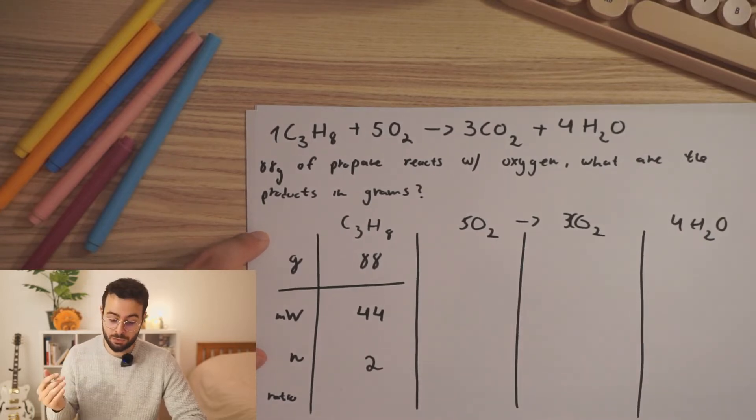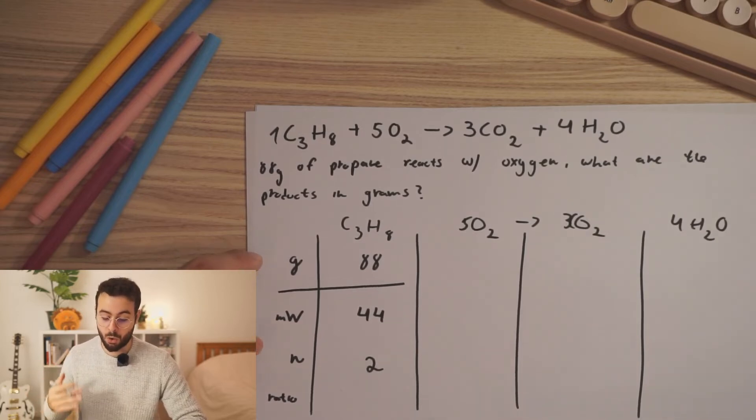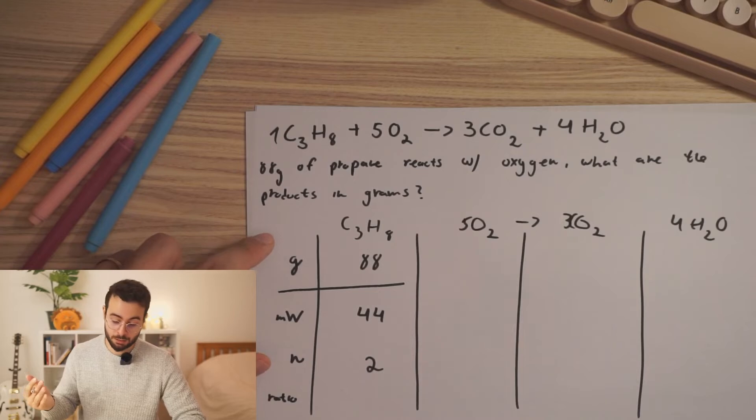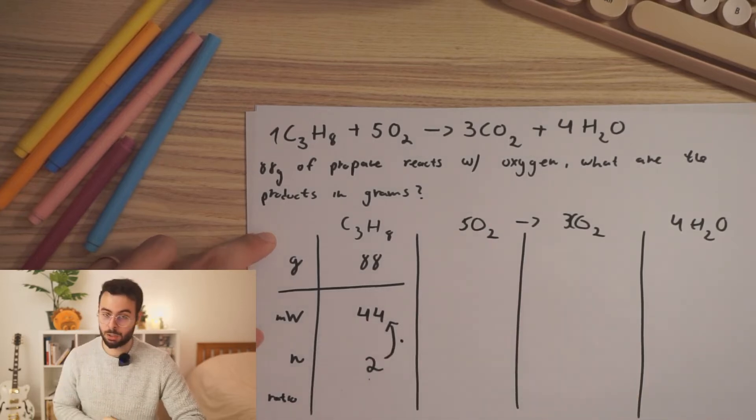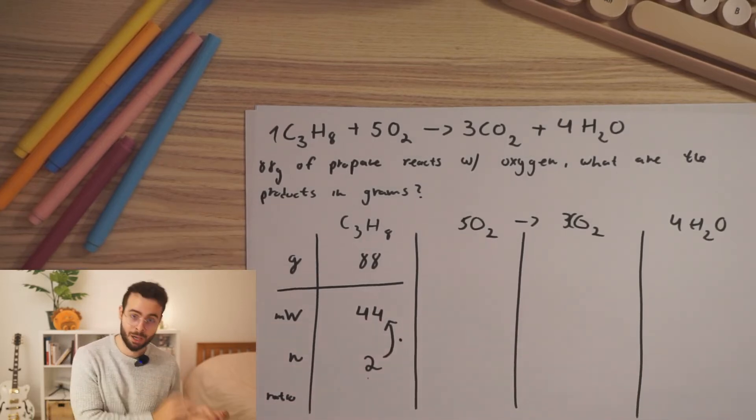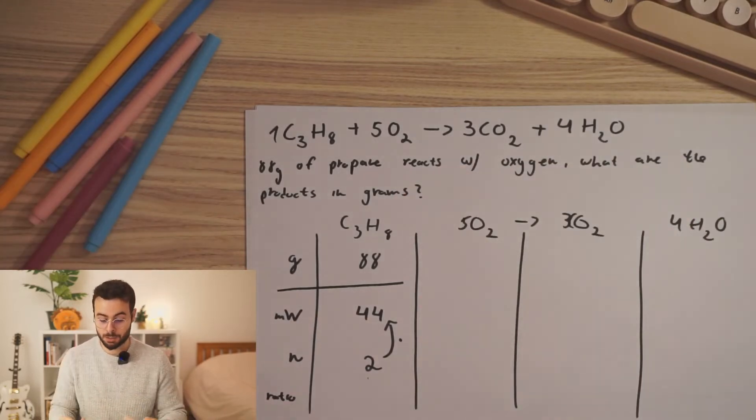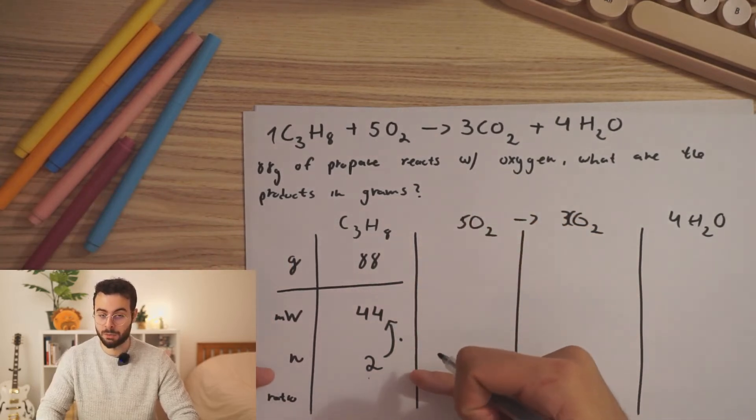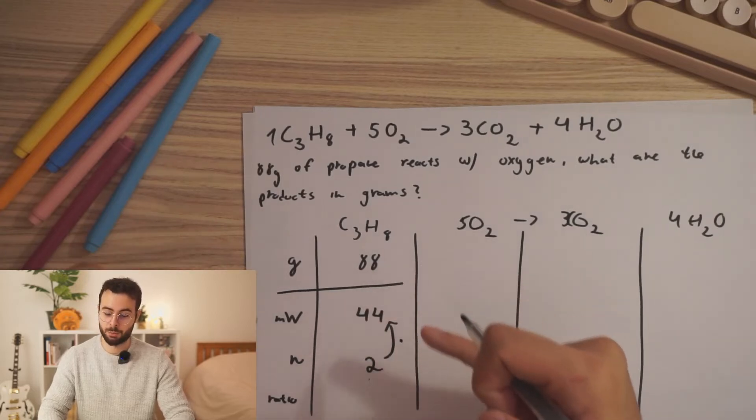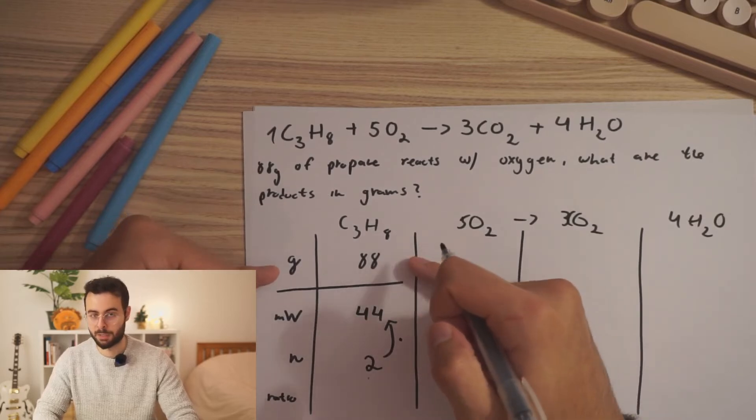If we were given 2 moles of propane, and they would have asked how many grams of propane we would have gotten, so 2 moles times, so I go up the table, times 44 will give us the number of grams. So if we go downwards, we will do 88 divided by 44 will give us 2 moles. And if we want to find the grams, it will be moles times 44 times the molecular weight will give us the number of grams.